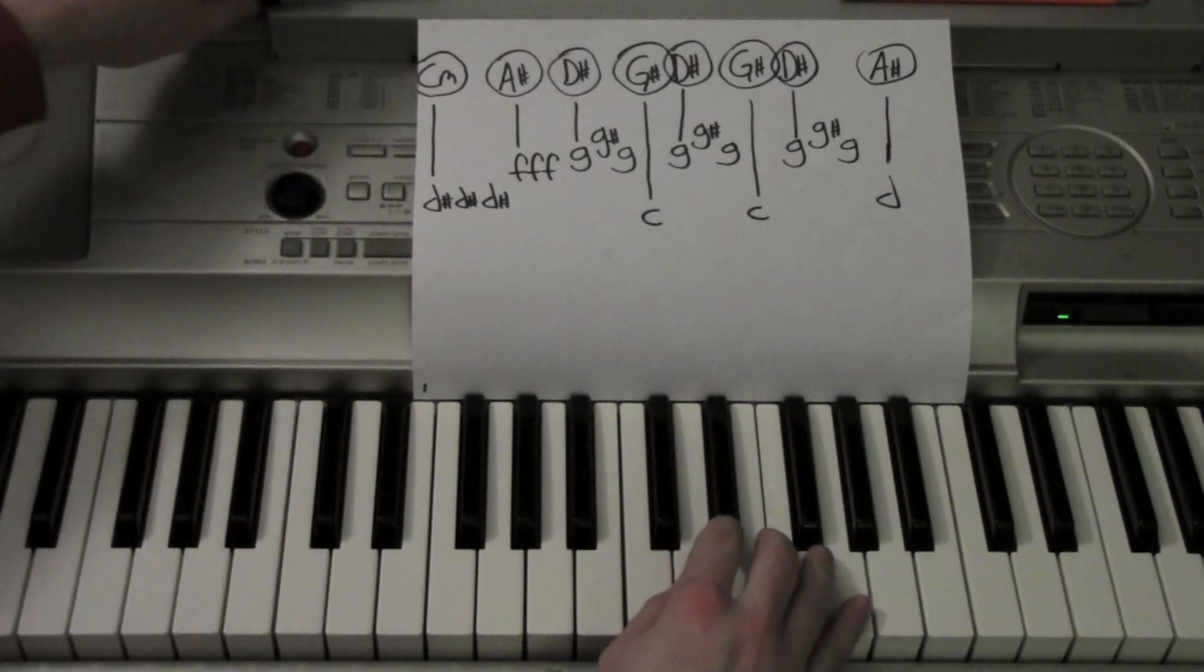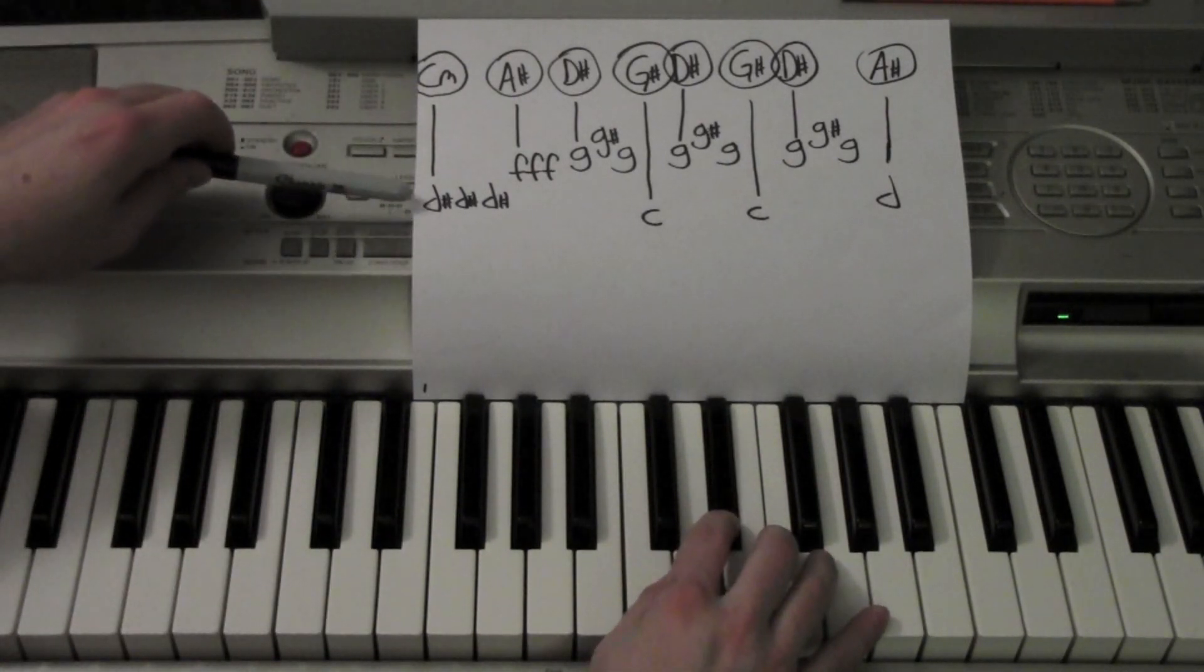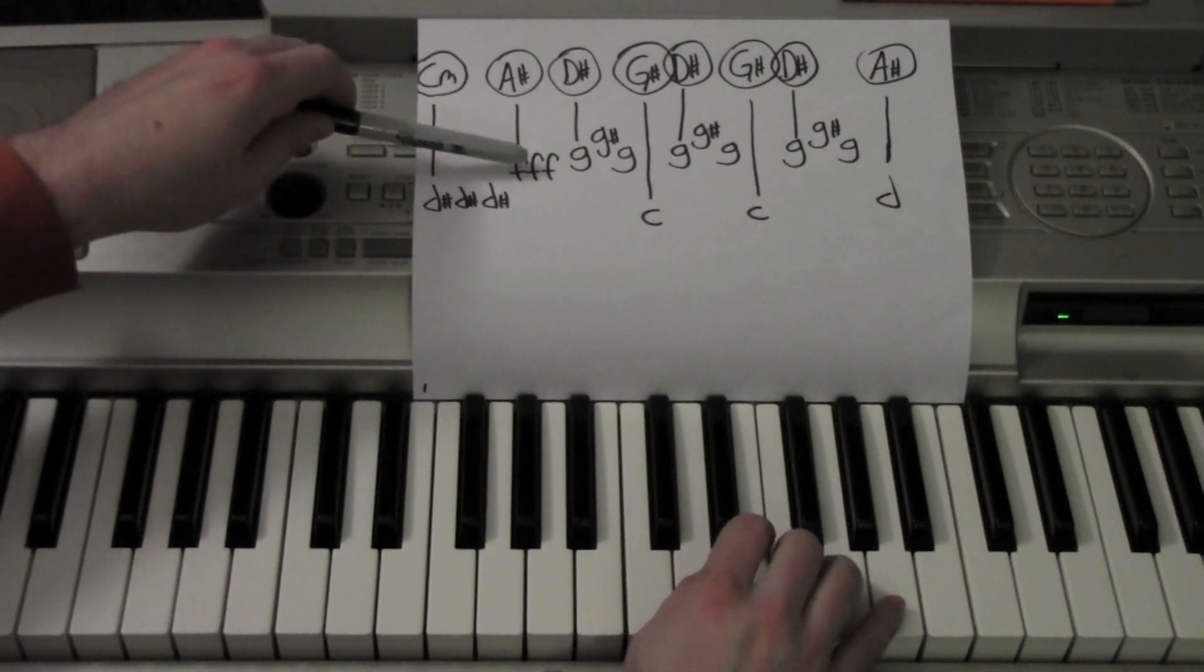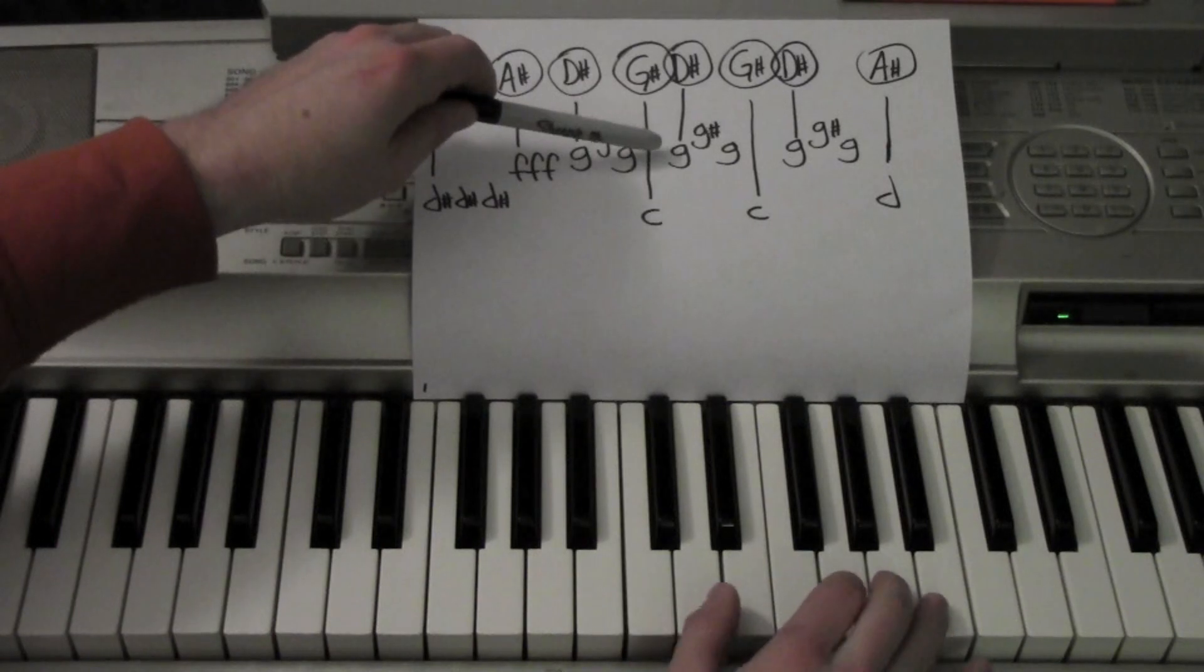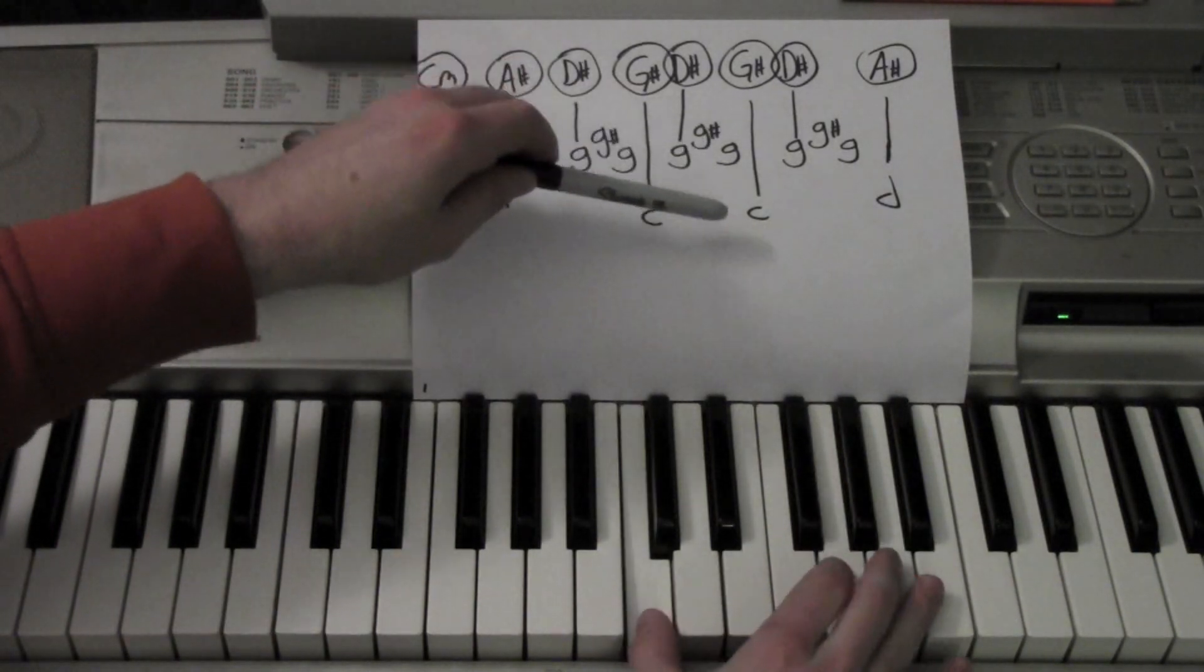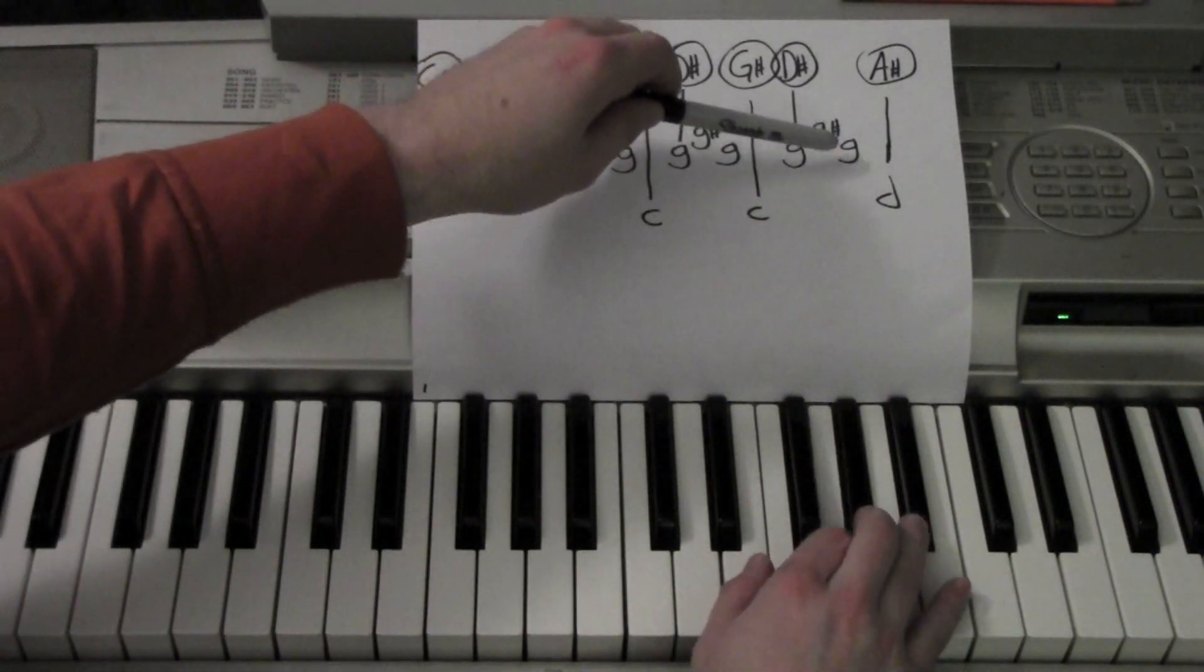Good. So here's what's happening. Right hand is going D sharp, D sharp, D sharp, F, F, F, G, G sharp, G, C, G, G sharp, G, C, G, G sharp, G, C, G, G sharp, G, D.